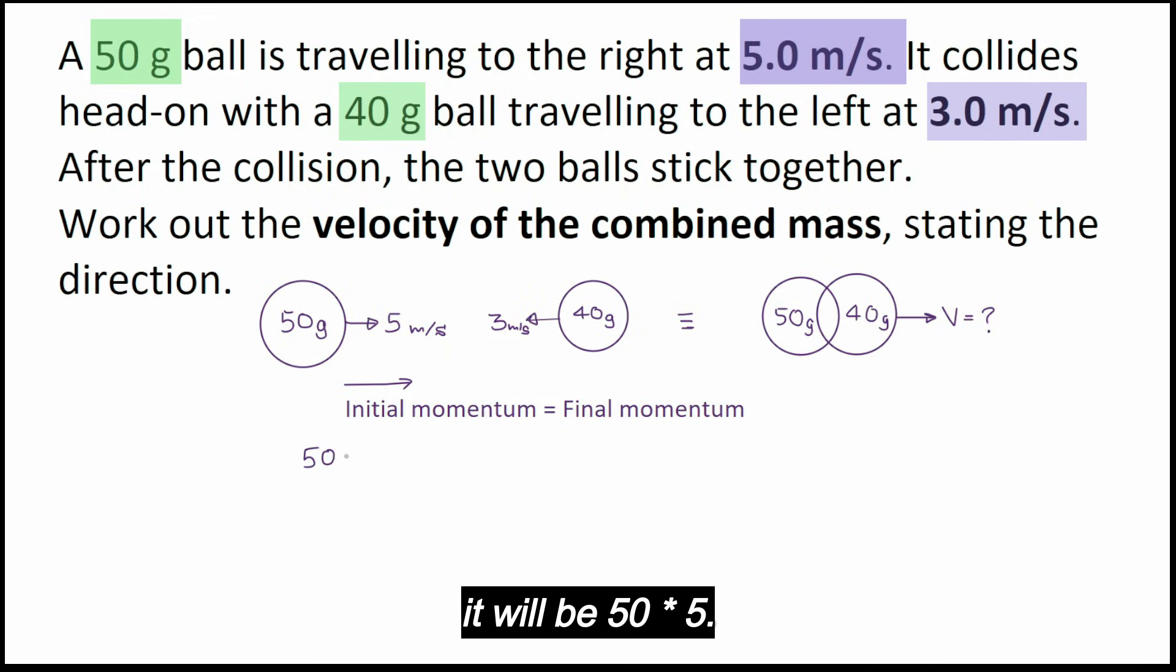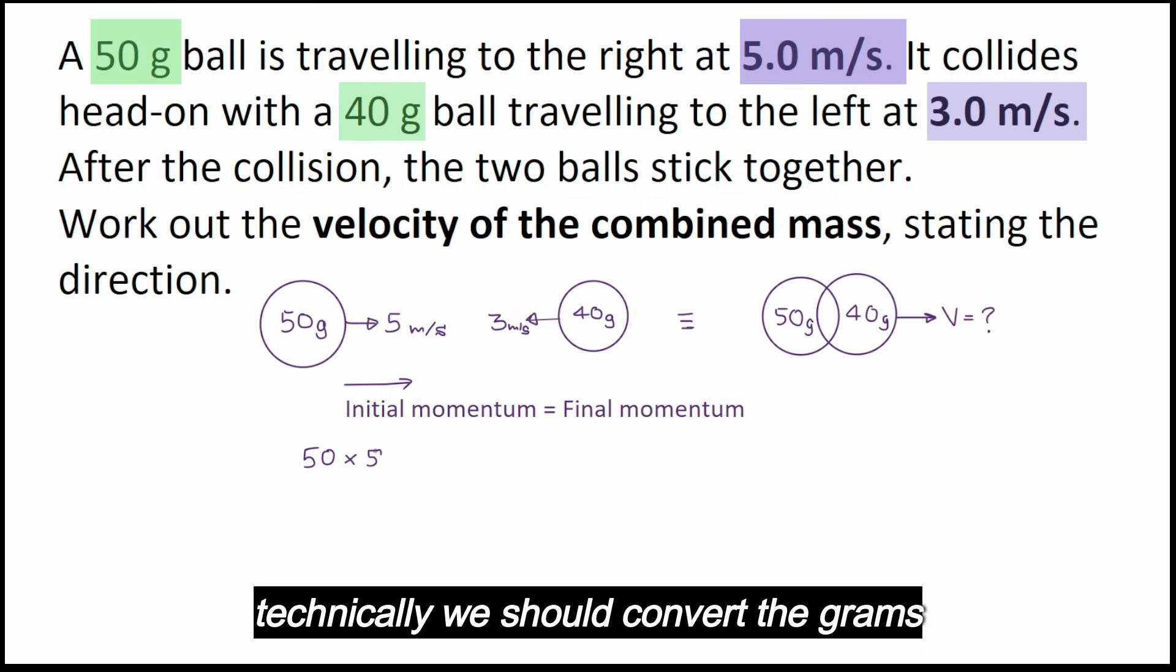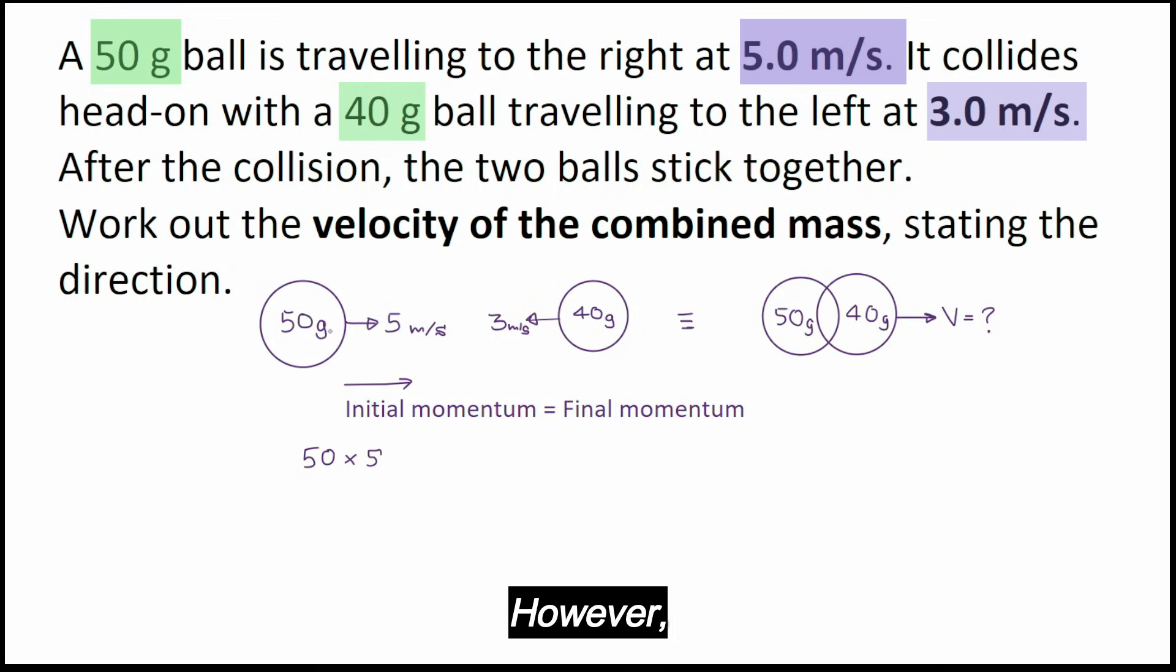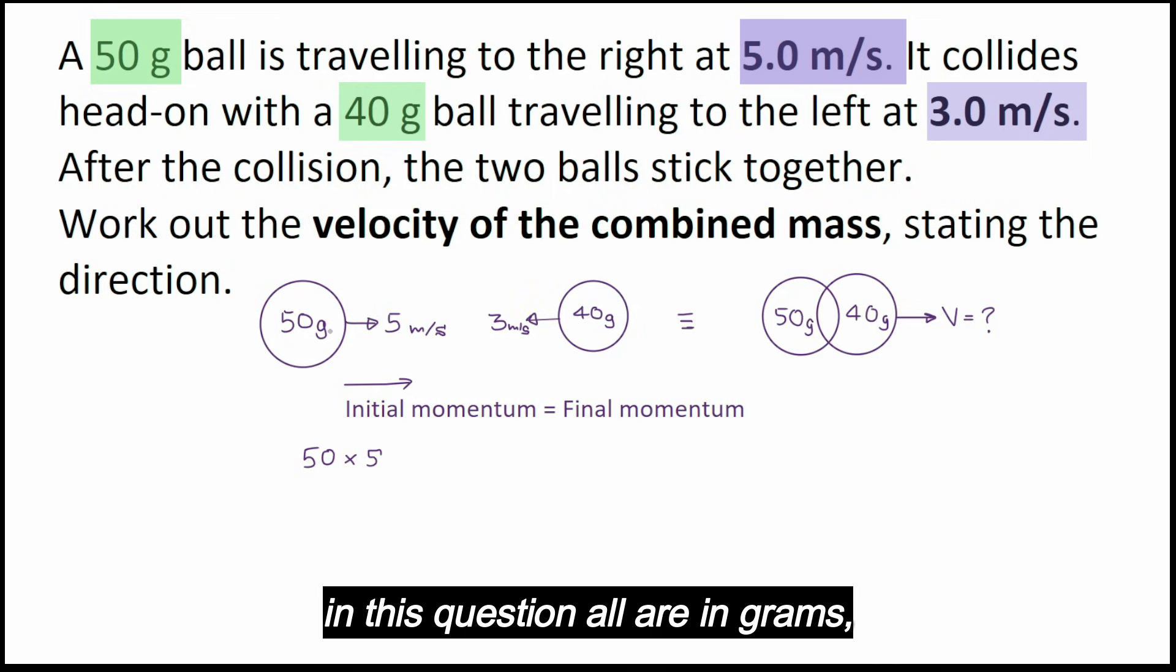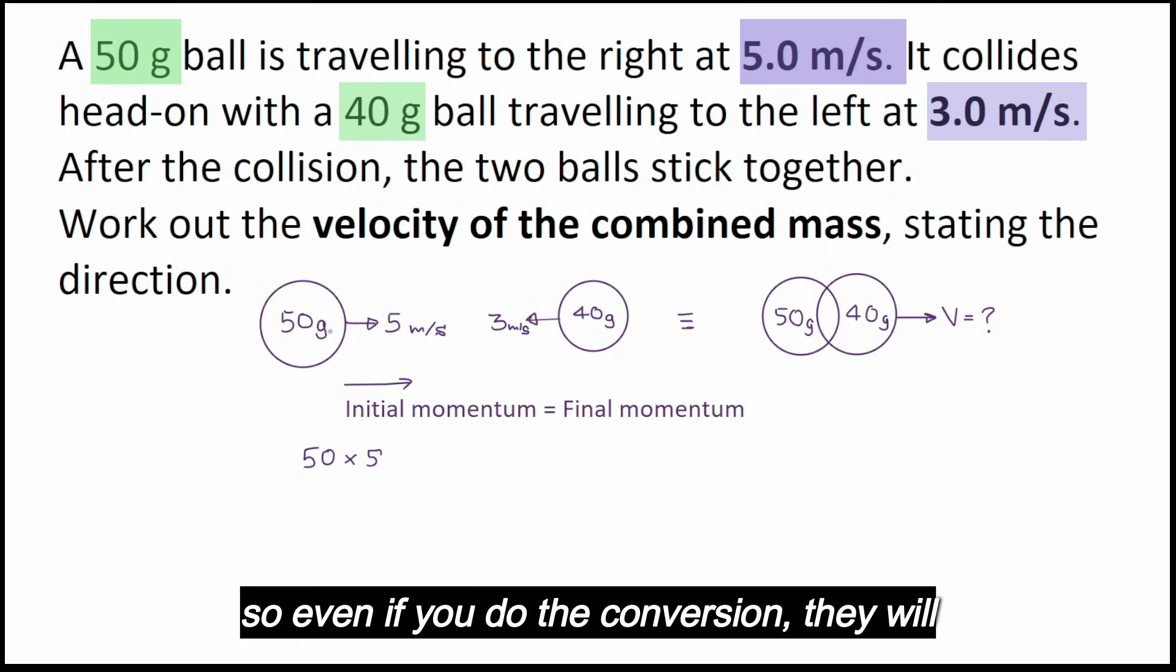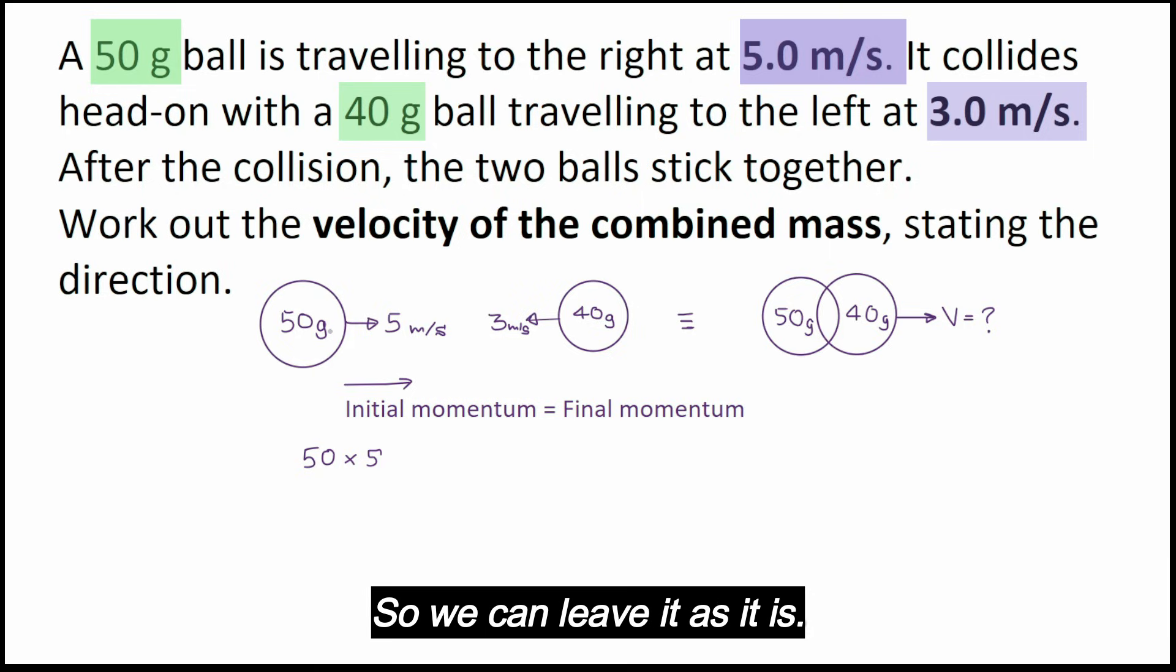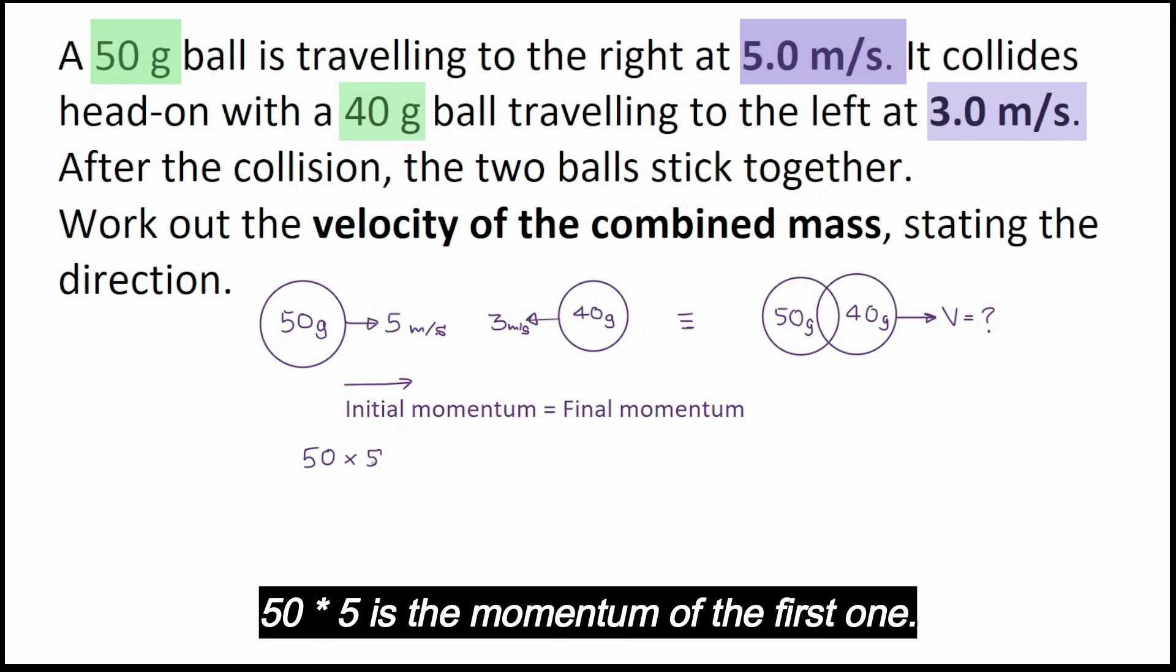Now what is the momentum before the collision? So the first object, it will be 50 multiplied by 5. Now technically we should convert the grams to kilograms to get the momentum in kilograms meters per second. However, in this question all are in grams, so even if you do the conversion they will get cancelled out, so it's not a problem.